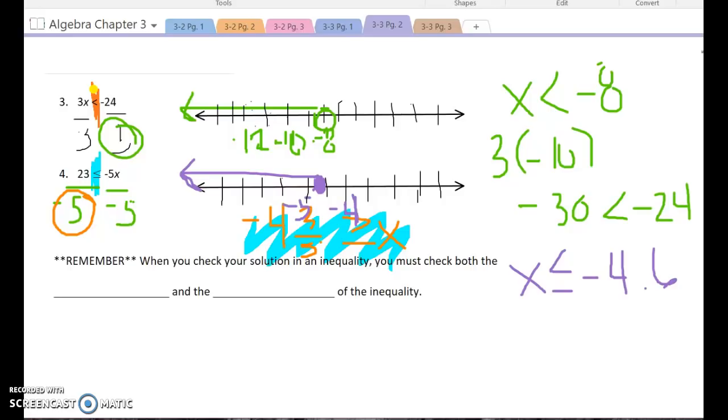Now I'm going to go ahead, I have my end point. So now I'm going to go ahead and check by multiplying a number that's smaller than this. So I'm going to take negative five times negative five, because negative five is smaller than negative four and six tenths. And I'm going to see how it stacks up and compares. Well, I know that negative five times negative five is positive 25. And yep, 23 is less than or equal to 25.